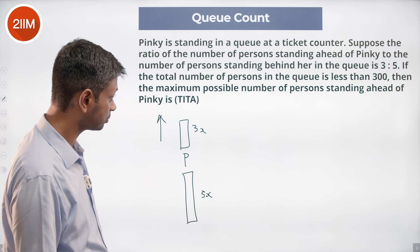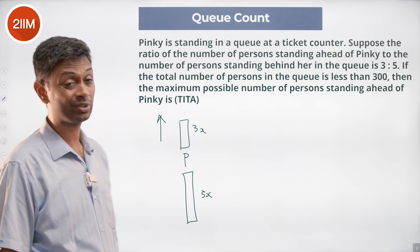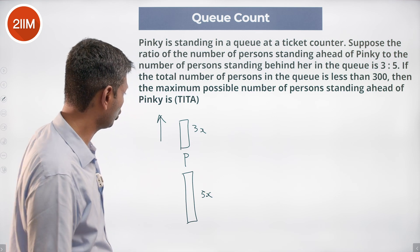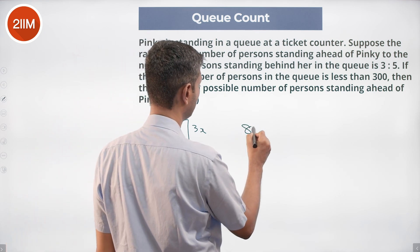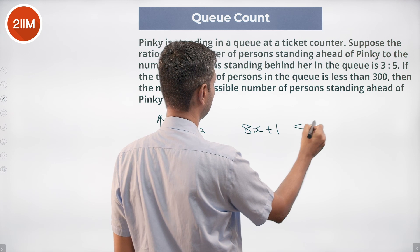The total number of people in the queue is less than 300, so the total number of people is 8x plus 1. 8x plus 1 is less than 300.